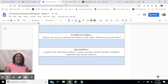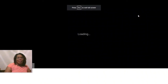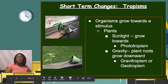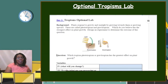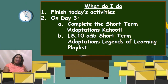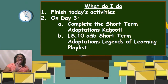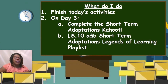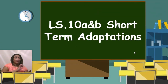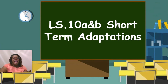If you didn't finish everything, make sure you're working on completing your optional tropisms lab and filling in that short-term adaptations worksheet to the best of your ability. On day three when you come back, you'll complete a Kahoot on short-term adaptations — I look forward to seeing your scores — and also a short-term adaptations Legends of Learning playlist that has a little assessment and some review games with the terms you learned this week. I really appreciate you being here, I hope you learned a lot, and have a great day!